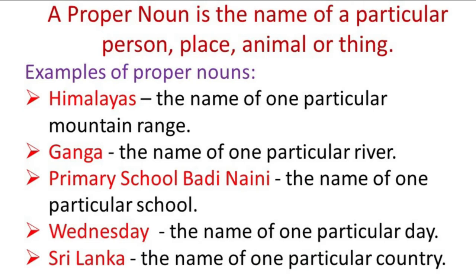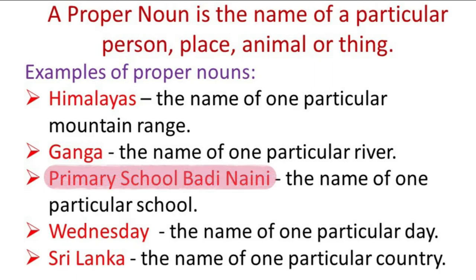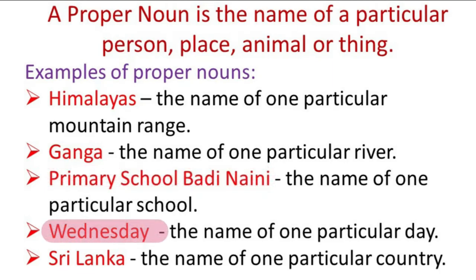So, I hope it is now clear that Himalayas, Ganga, Primary School Badi Nani, Wednesday, and Sri Lanka are proper nouns, as they are names of particular places or things.